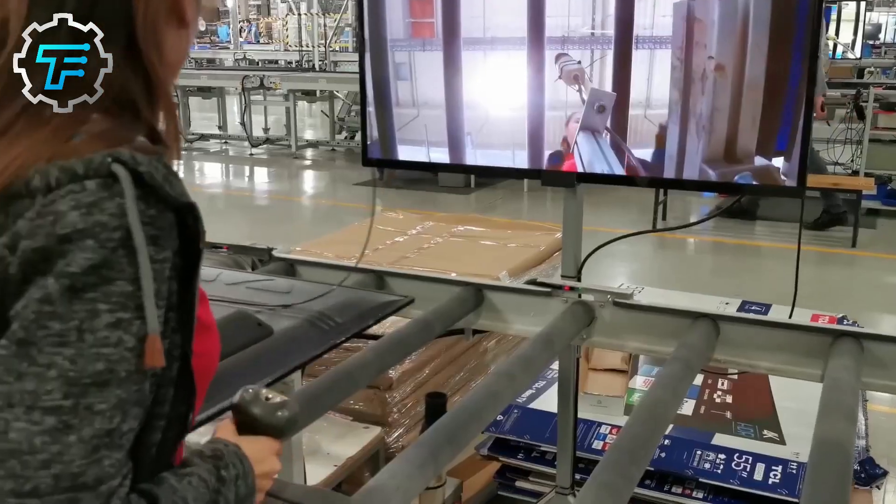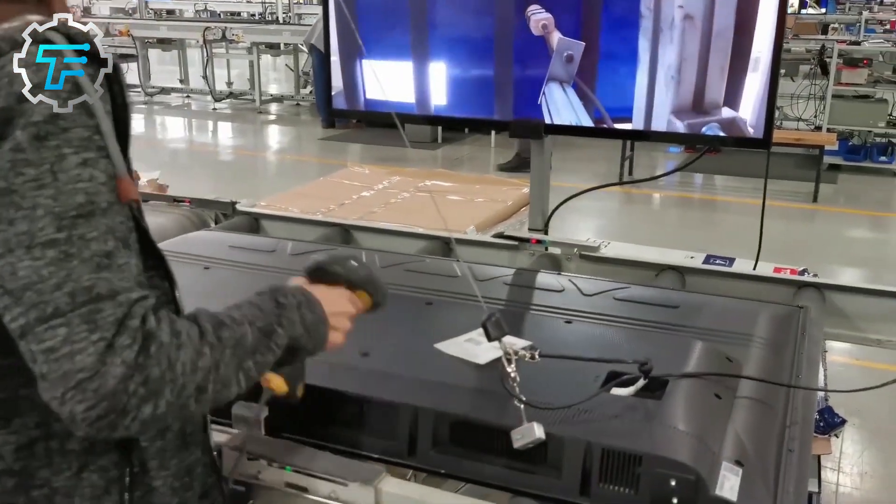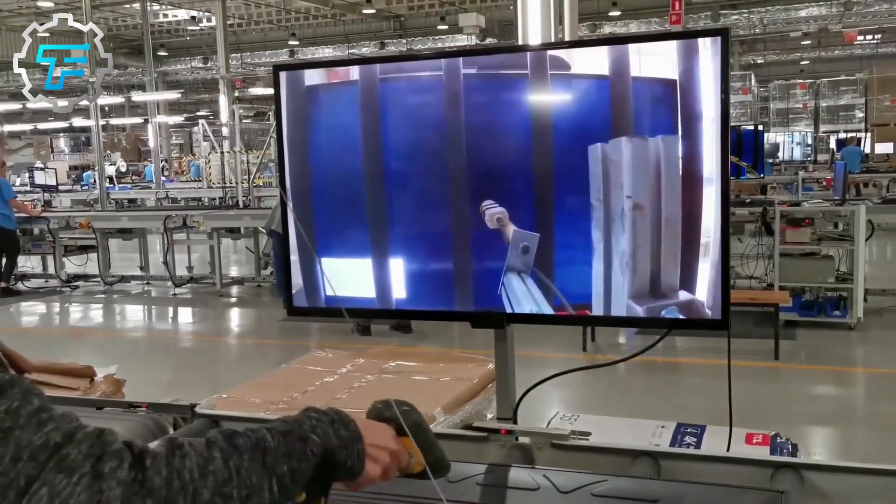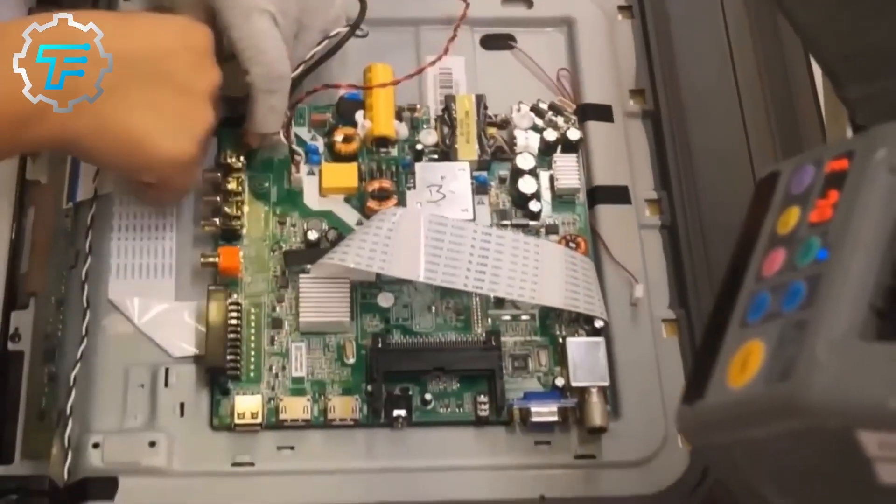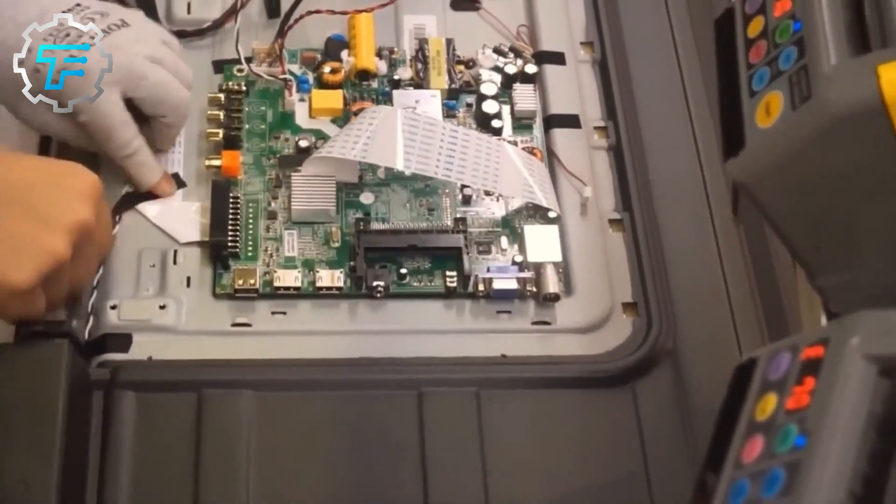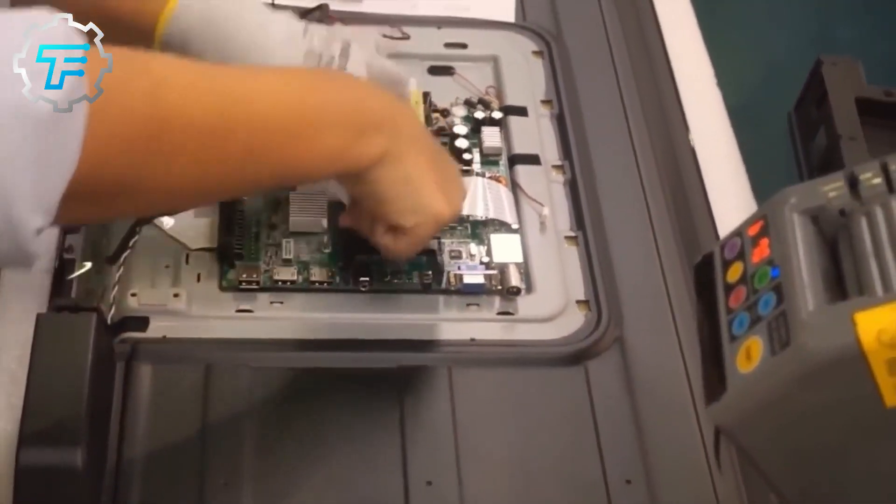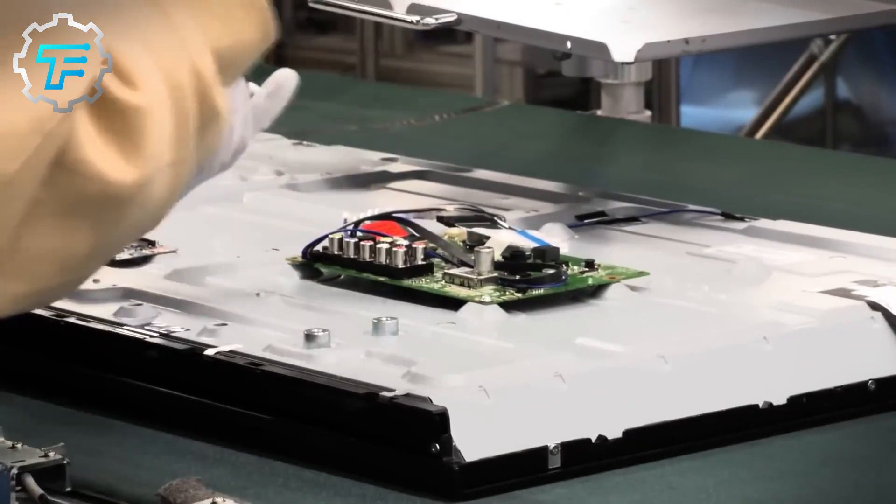After the TV components are manufactured, they go to assembly lines, and these small factories that receive the components assemble the TV. These factories do the conveyorized assembly, and the screen, circuit board, and speakers are installed in the case, after which the TV is inspected, packaged, and shipped to stores.